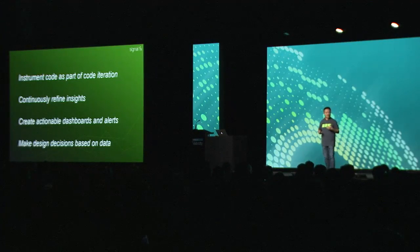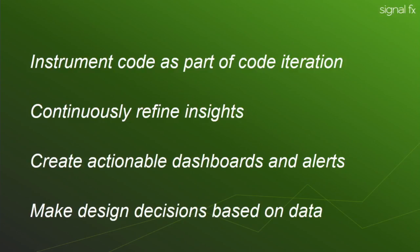Some of the things we do to accomplish this: we instrument code as part of our iteration — not just unit tests, not just integration tests, but also instrumentation. We continue to refine the insights we've built. For example, once you remove a bottleneck like the queue size, the next bottleneck becomes the rate of change going into the queue. You want to continue to refine based on the changes you're making in your code, and leaders make decisions on how to proceed in the next phase and next iteration.